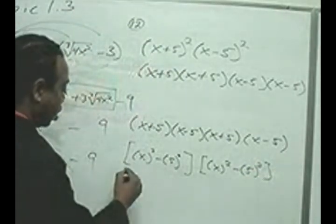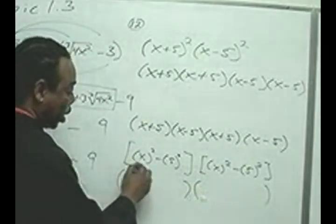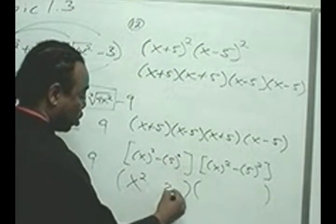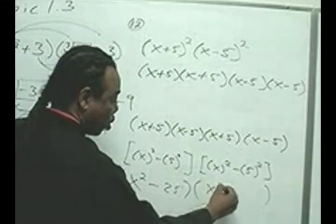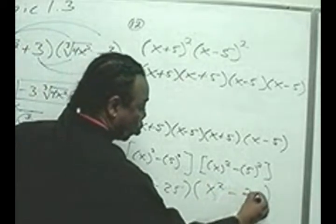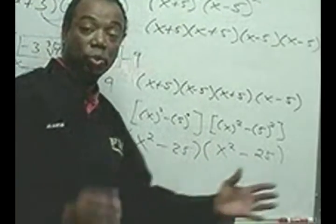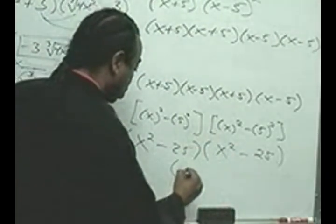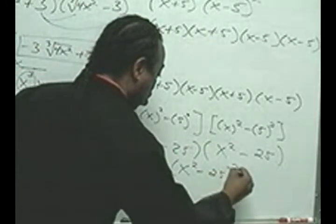Now, we'll go ahead and simplify this. x times x is x squared. 5 times 5 is 25. Now, I'm going to rewrite these two as an exponential. So, this will be x squared minus 25, all squared.